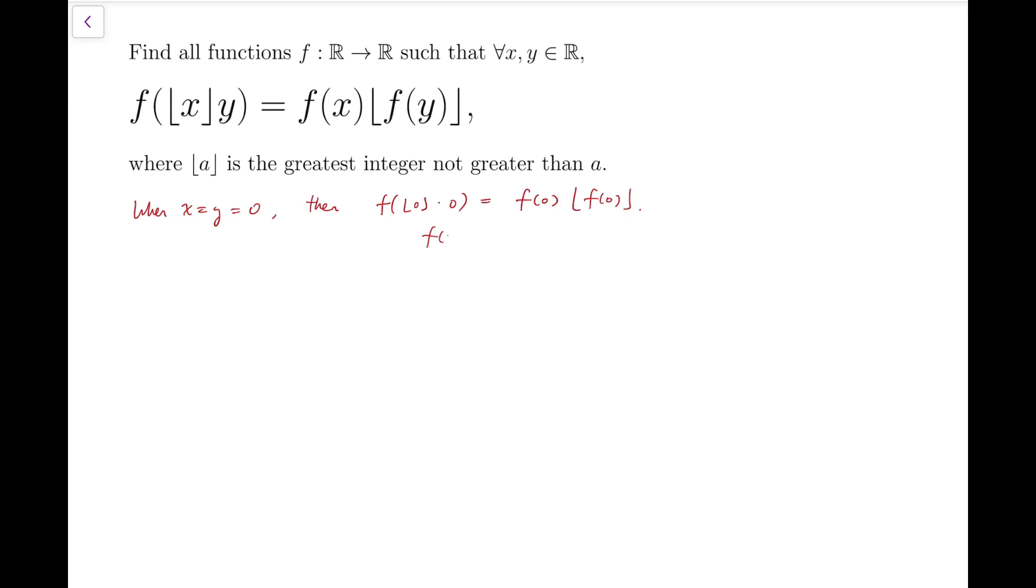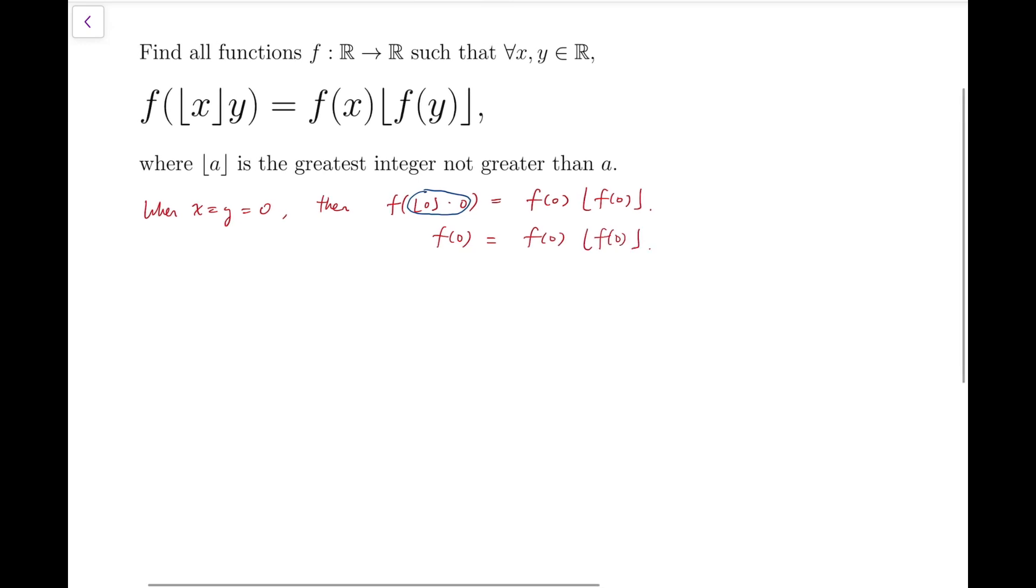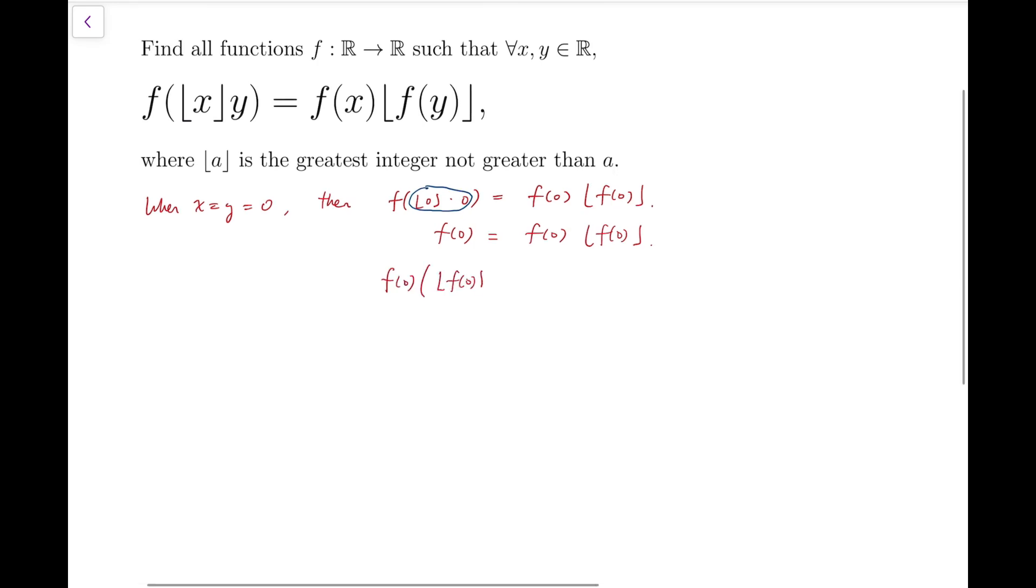The left-hand side is clearly f of 0 because the things inside are simply 0. If you multiply something by 0, then it's 0. So we have f of 0 equals f of 0 times the floor function of f of 0. Now that we have a common factor of f of 0 on both sides, we can factor it out: f of 0 multiplied by the floor function of f of 0 minus 1 equals 0. So f of 0 is either 0 or its floor function equals 1.